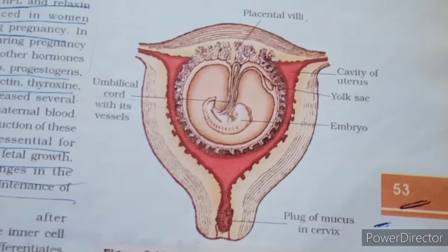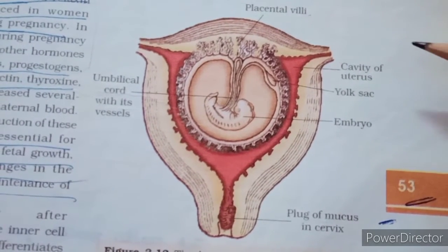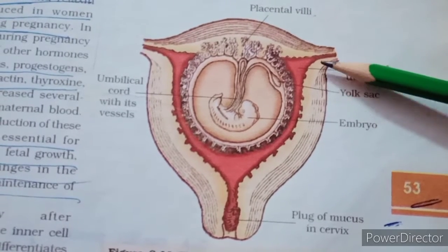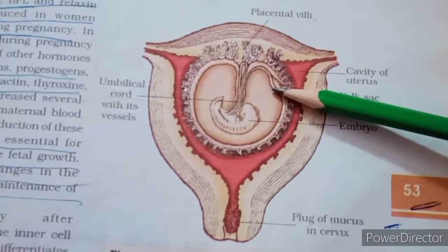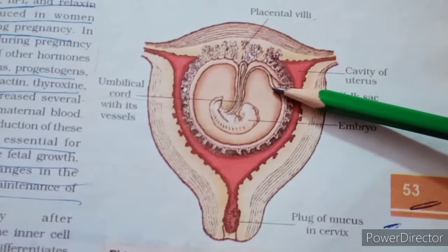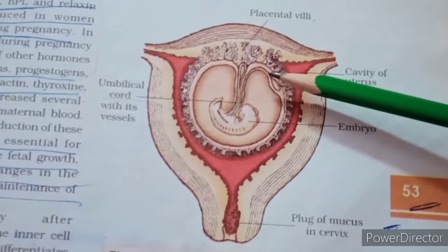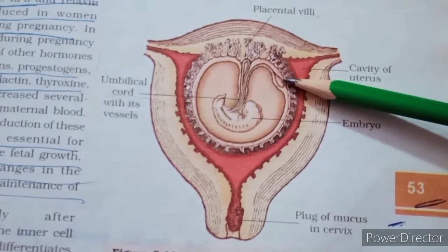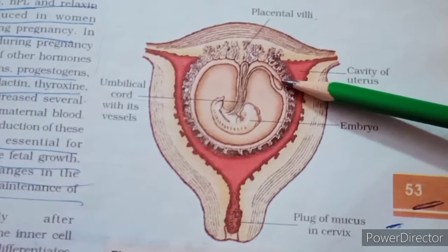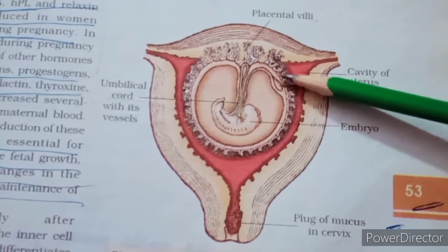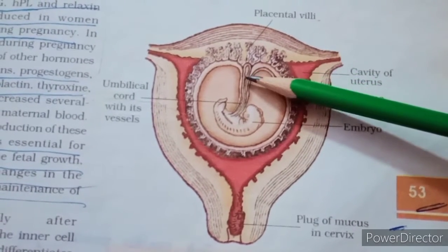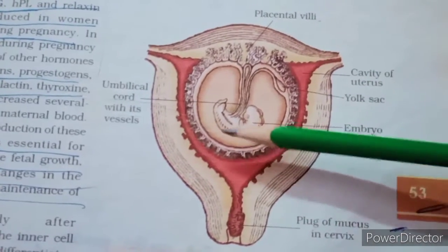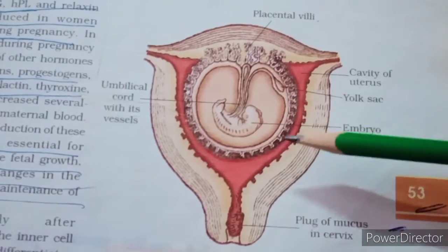If the sperm fuses with the egg, the zygote is transferred to the uterus for implantation — the zygote attaches deeply to the uterine wall, which is richly supplied with blood vessels. The tissue connection that develops is called the placenta.